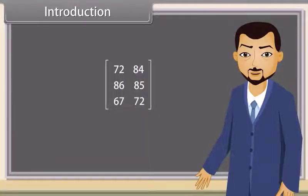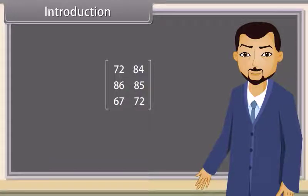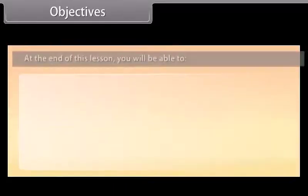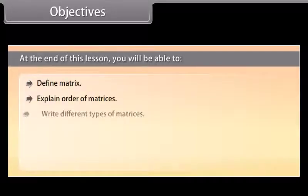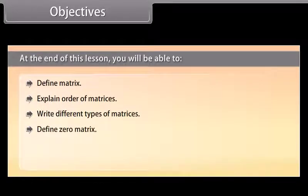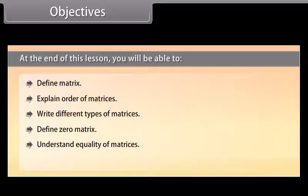Can you see I have written your marks in this bracket? What does this represent? This represents a matrix. Today we will learn what matrices are and their operations. Objectives: at the end of this lesson you will be able to define a matrix, explain the order of matrices, write different types of matrices, define a zero matrix, understand equality of matrices, and understand addition of matrices.